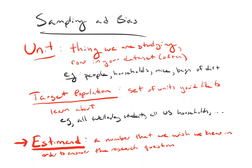If I knew the parameter, I would be done. If I'm interested in how Wellesley students feel about remote learning and I had an answer from every single Wellesley student — say a rating on a scale from one to ten — I could take the mean and find out the average opinion. If I'm interested in average household income in the U.S. and I had every household's income, I could take the mean or median and that would literally be the answer to my research question.